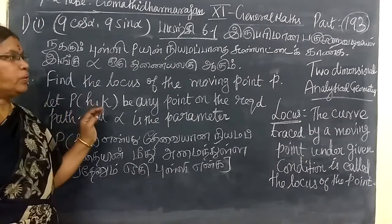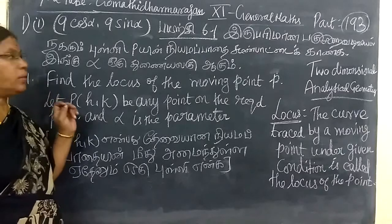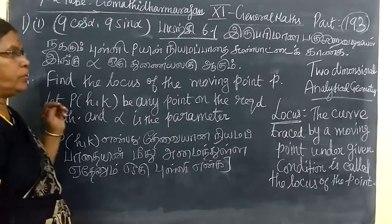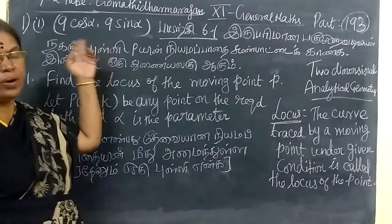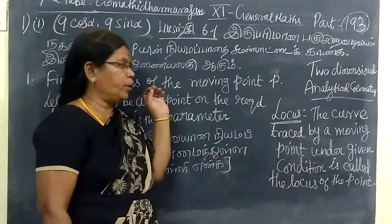Hello, I am standing at Dental Man's program. First question, exercise 6.1. In the first question, I have given 9 cos alpha, 9 sine alpha as the point.